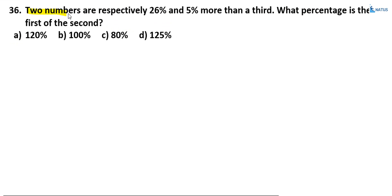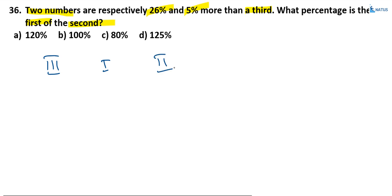Two numbers are respectively 26% and 5% more than a third number. What percentage is the first of the second? Here, two numbers are compared to the third number, and the question asks: what percentage is the first of the second? A simple technique: take the third number, first number, and second number.